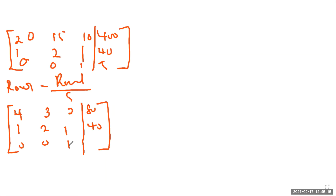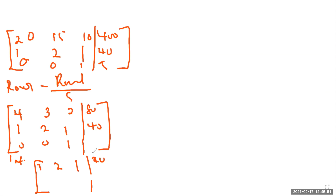Next, because we want row 1 to start with 1, 0, 0, we can interchange rows 1 and 2. After the interchange: row 1 becomes 1, 2, 1 | 40; row 2 becomes 4, 3, 2 | 80; row 3 stays 0, 0, 1 | 5.